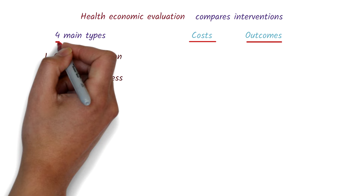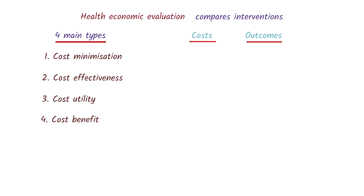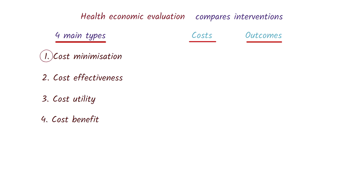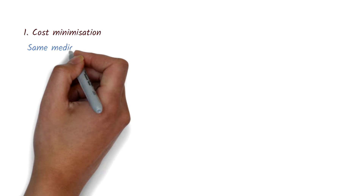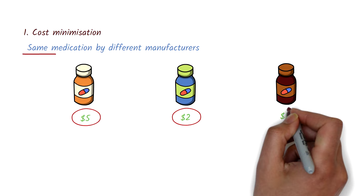Now let's take a look at the different types of economic evaluations. The first type is a cost minimization analysis. This type of analysis is used when the product or outcome is the same and what we're comparing is the cost. For example, let's say we're comparing blood pressure-reducing medications made by different manufacturers with different prices. In a cost minimization analysis, because the medicine is the same, we simply compare the costs.